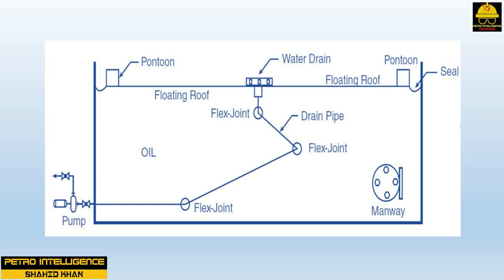The double-deck floating roof has a double deck over the entire liquid surface. The space between the decks is divided into compartments so that a leak will not sink the entire roof. The double-deck roof is more buoyant than the other types, and the airspace between the decks provides an insulation barrier over the whole roof. This type of roof is the most expensive of the three types.